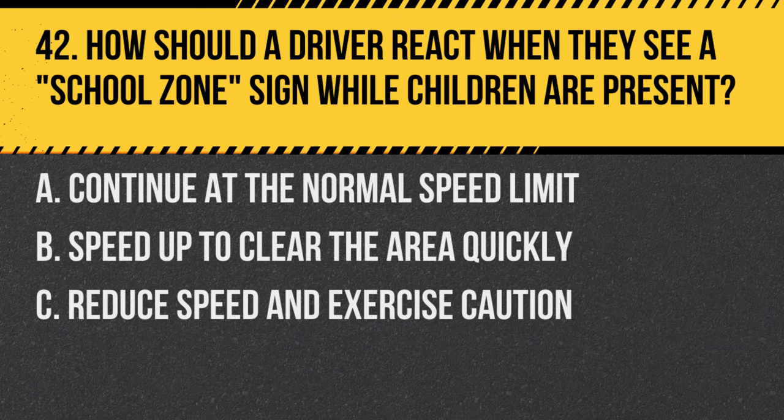Question 42. How should a driver react when they see a school zone sign while children are present? A. Continue at the normal speed limit. B. Speed up to clear the area quickly. C. Reduce speed and exercise caution. Answer: C. Reduce speed and exercise caution. Drivers should slow down and be extra cautious in school zones when children are present.